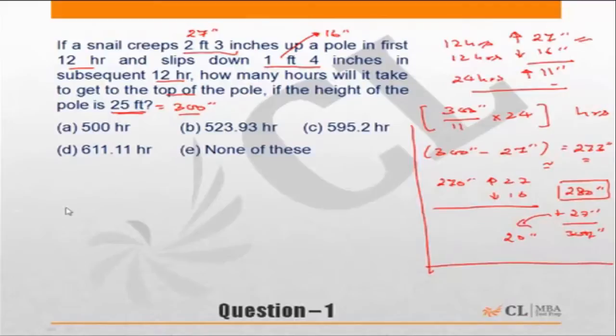So let's solve the question now. The height of the pole is 300 inches, and we know that in every block of 24 hours the snail goes up by 11 inches. First 12 hours it goes up, next 12 hours it comes down, so it goes up in 24 hours by 11 inches, or in 240 hours by 110 inches.